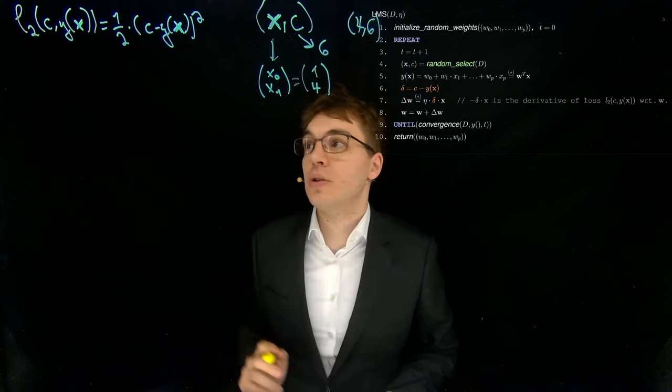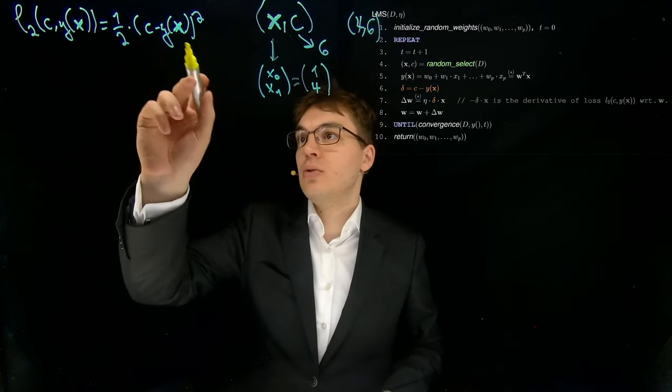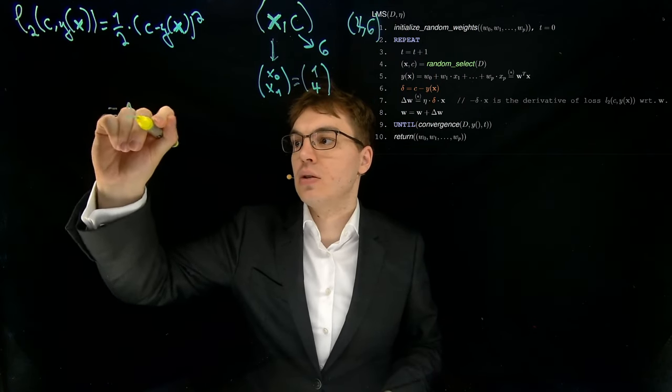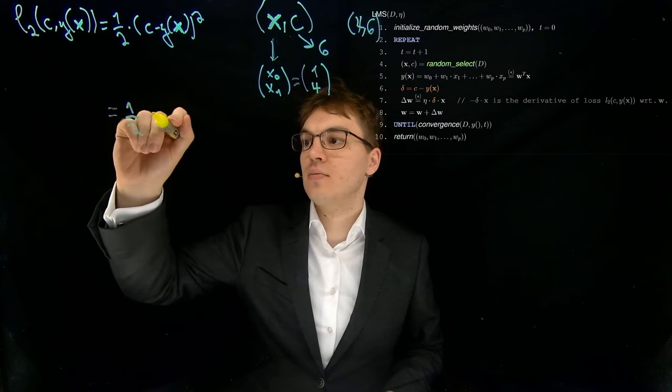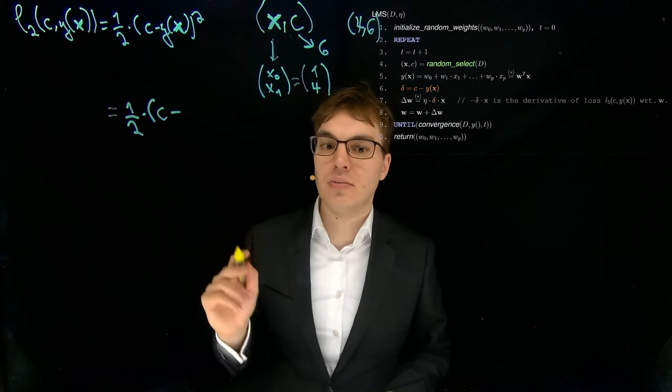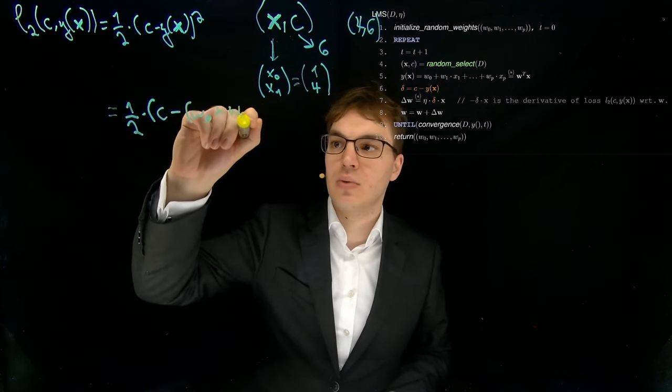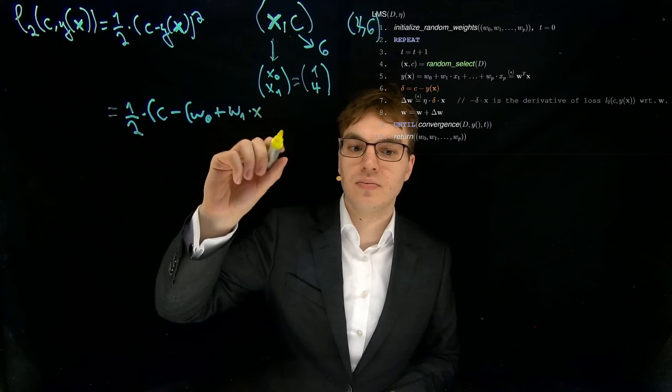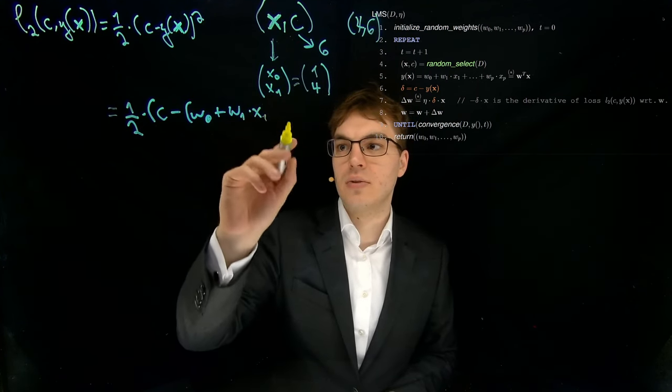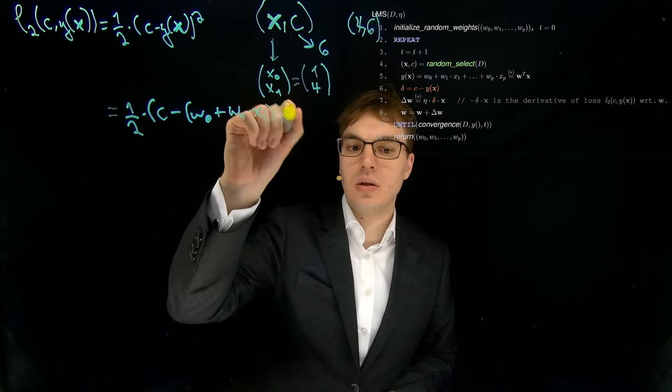Let's now compute this loss over here. So what we can do here with this Y of X is we can fill in our model equation. So we get 1 half times C minus, and now this model equation is W0 plus W1 times X, or X1 if you want. Let's do it that way, squared.